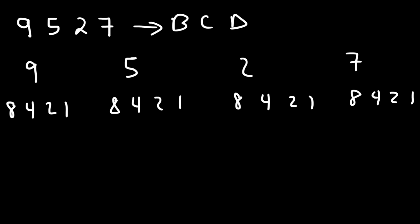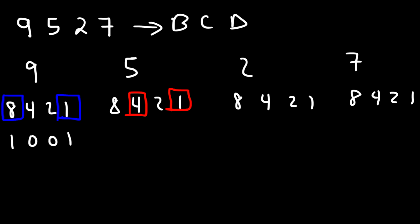Now to get 9, we need to add up 8 and 1, so 9 can be represented by the 4-bit binary code 1001. Now to get 5, it's going to be 4 plus 1, and so 5 is 0101.